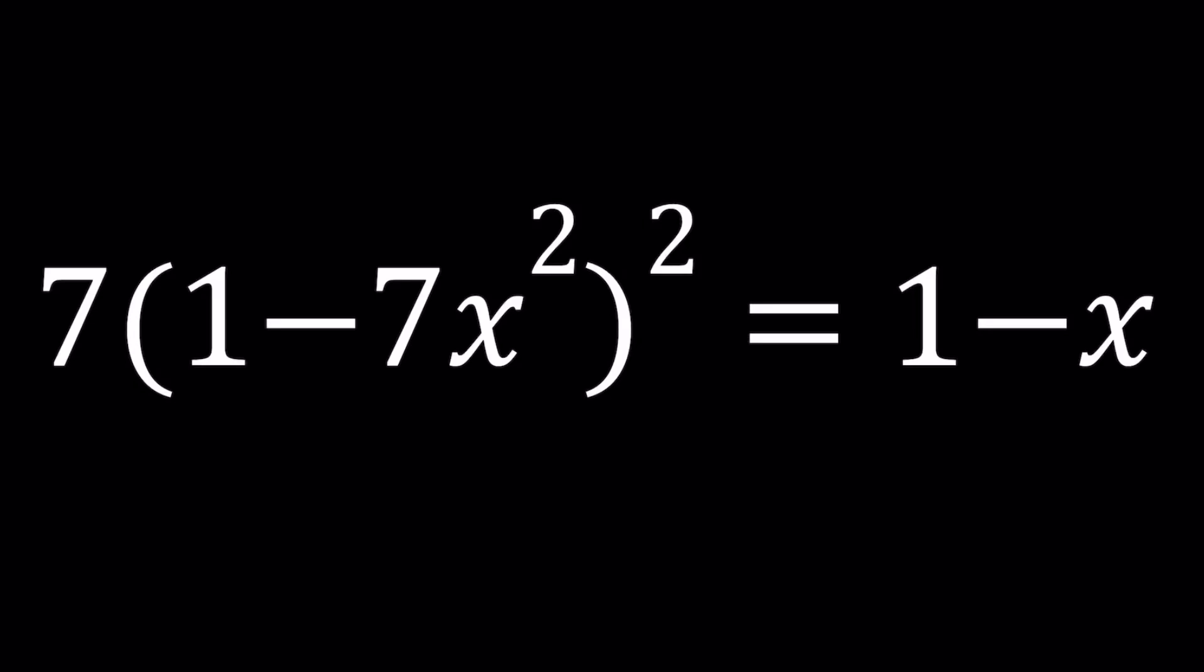Hello everyone. In this video we're going to be solving a nice polynomial equation. We have 7 times the quantity 1 minus 7x squared to the second power equals 1 minus x, and we're going to be solving for x values. I'll be presenting two methods and also show you a graph at the end.